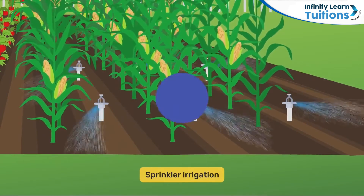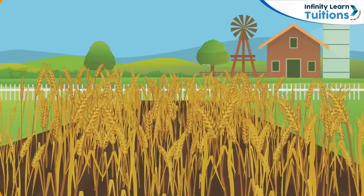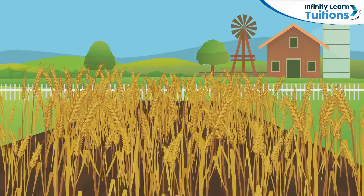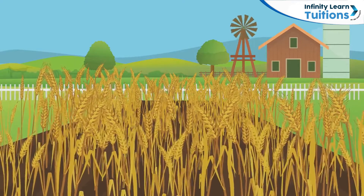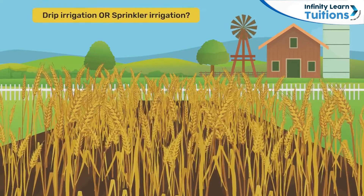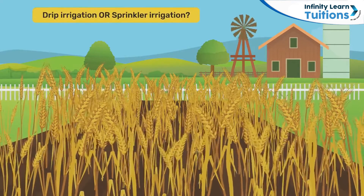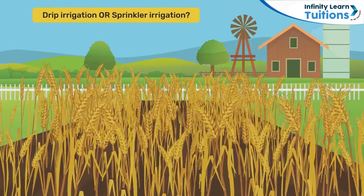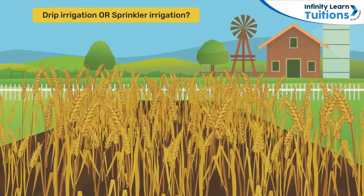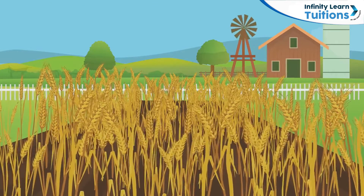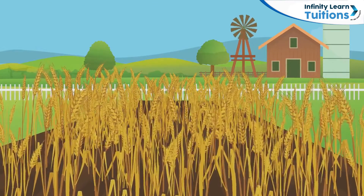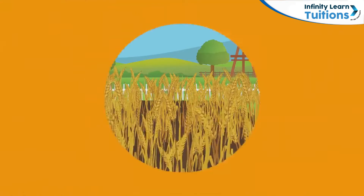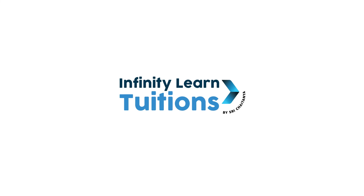Now a lot of factors, like the type of crop and soil, have to be considered before one can decide which irrigation system to use on their farm. Moving forward, we are going to explore these factors in great detail, so buckle up. Let's go.